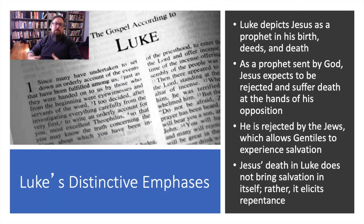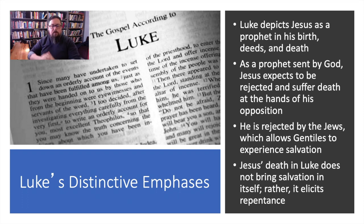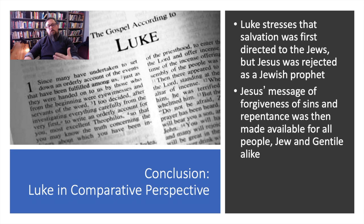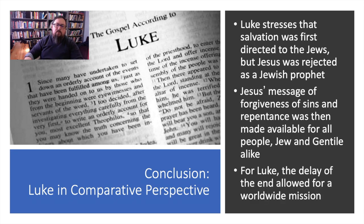In conclusion, Luke depicts Jesus as a prophet in his birth, his deeds, and his death. As a prophet sent by God, Jesus expects to be rejected and to suffer death at the hands of his opposition. He is rejected by the Jewish religious leaders, which allows the Gentiles to experience salvation. Jesus' death, in contrast to other places, does not bring salvation—rather, it elicits repentance. This leads us to Acts, because Luke stresses that salvation was first directed to the Jews, but Jesus was rejected as the Jewish prophet. His message of forgiveness of sins and repentance was then made available for all people, Jew and Gentile alike. For Luke, the delay of the end allowed for a worldwide mission.